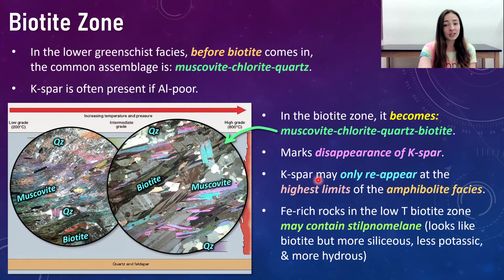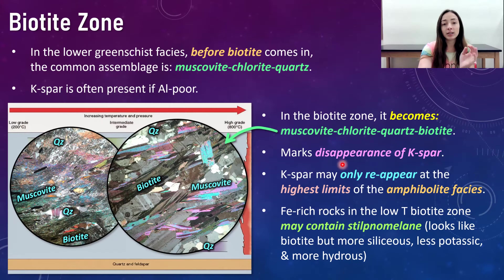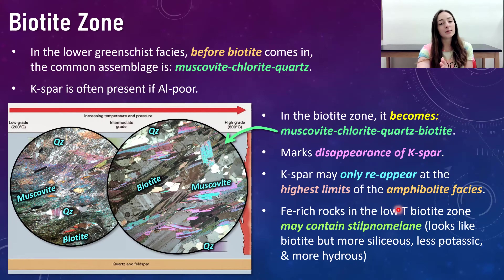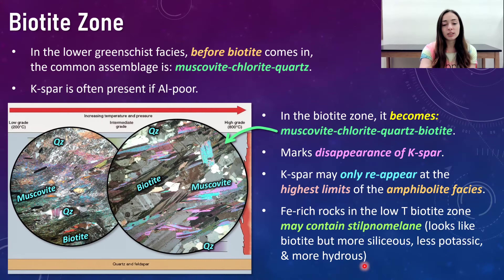Potassium feldspar doesn't reappear in Barrovian metamorphism of pelitic rocks until the highest limits of the amphibolite facies — it has to be really high grade for K-spar to reappear. In the low-temperature biotite zone, iron-rich rocks may contain stilpnomelane, which looks like biotite but is more siliceous, less potassic, and more hydrous.